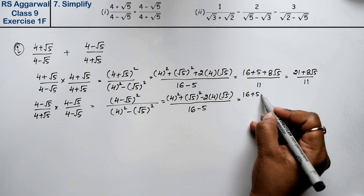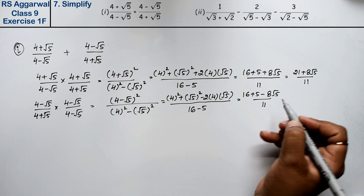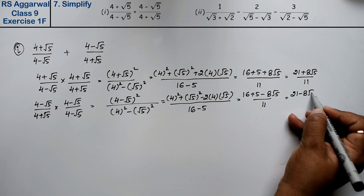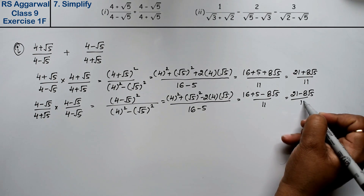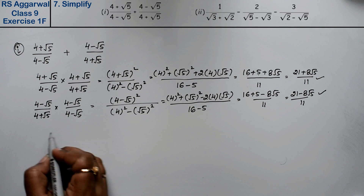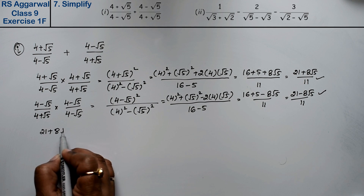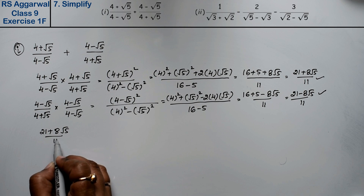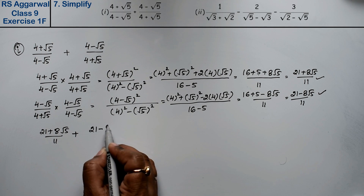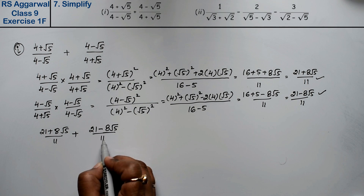So the second fraction gives (21 - 8√5)/11. Now we add the two results: (21 + 8√5)/11 + (21 - 8√5)/11. Taking LCM as 11, we get (21 + 8√5 + 21 - 8√5)/11.